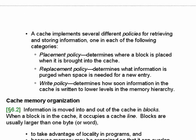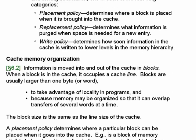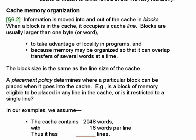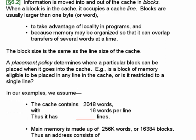We're now going to talk about cache memory organization. There are several kinds of cache memory organizations. When information is moved into and out of the cache, it's moved in units called a block. These are usually 64 to 256 bytes long — usually 128 or 256 bytes long.